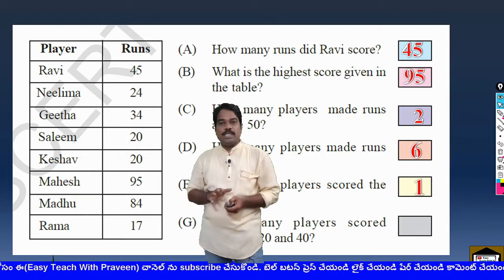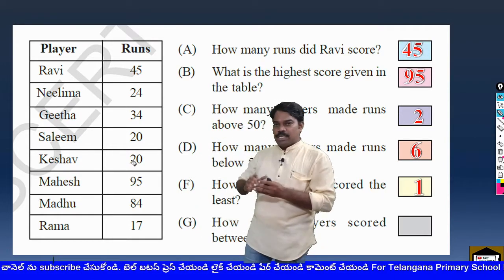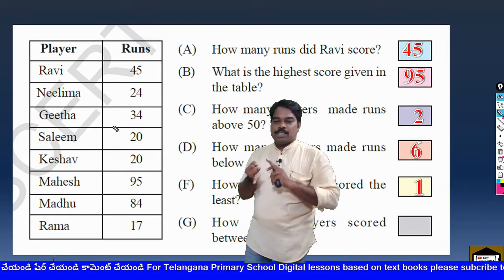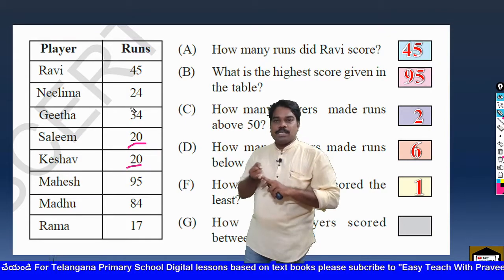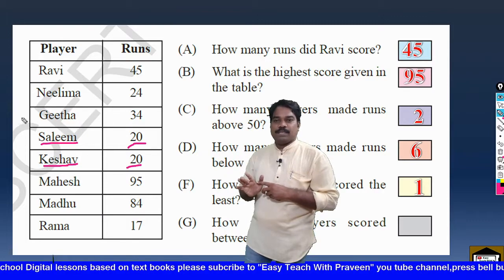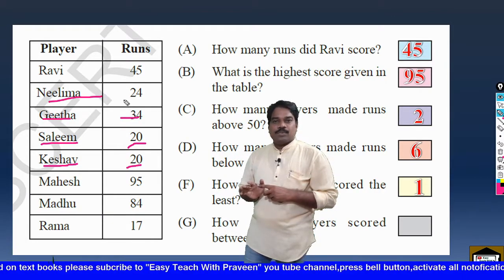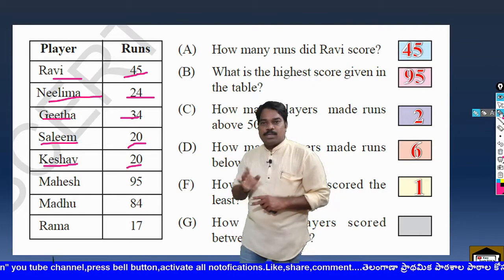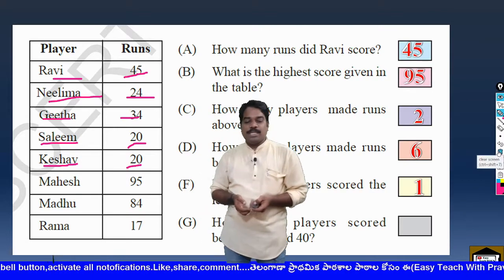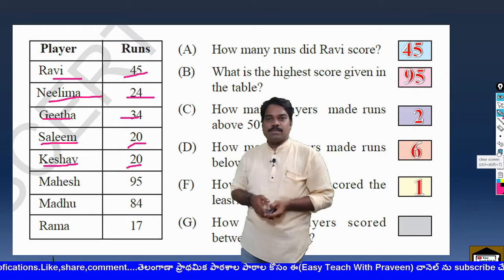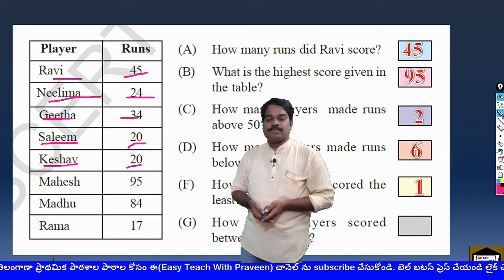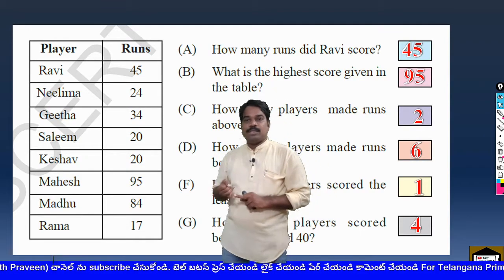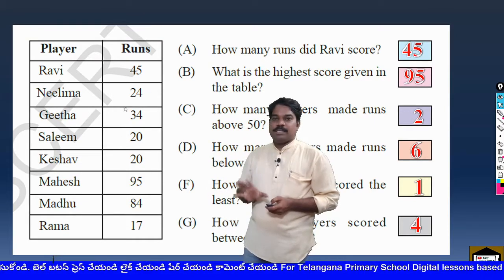Now how many players scored between 20 and 40? We have to count them. 20 was made by Salim and Keshav — 2 people. And 34, and 24 — these are also between 20 and 40. If we count 20 also, that will be 4 or 5. Neelima scored 24 and Geeta scored 34, both below 40. So we have answered the questions in this table.